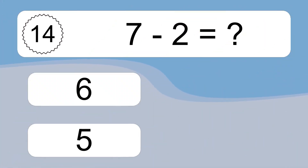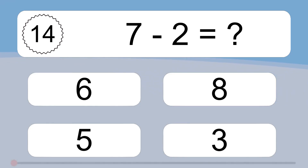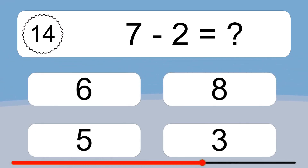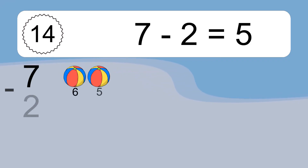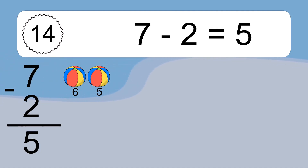7 minus 2 equals what? 7 minus 2 equals 5. Let's count it. 6, 5.